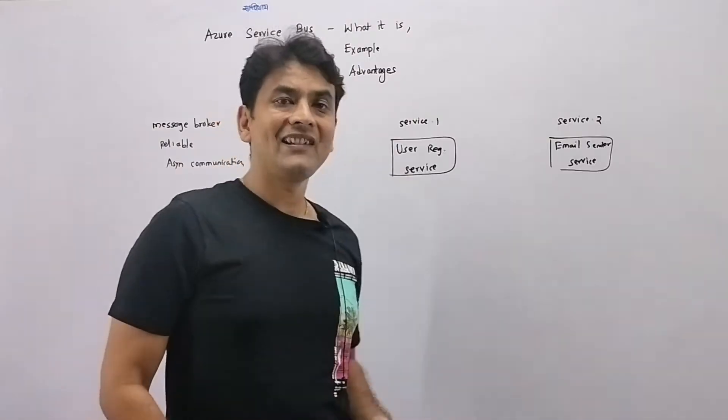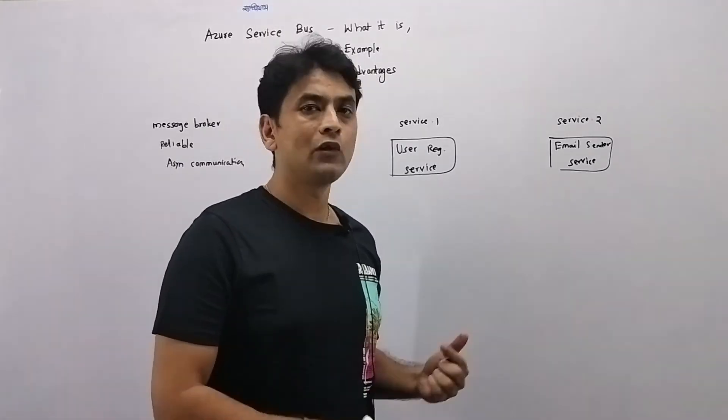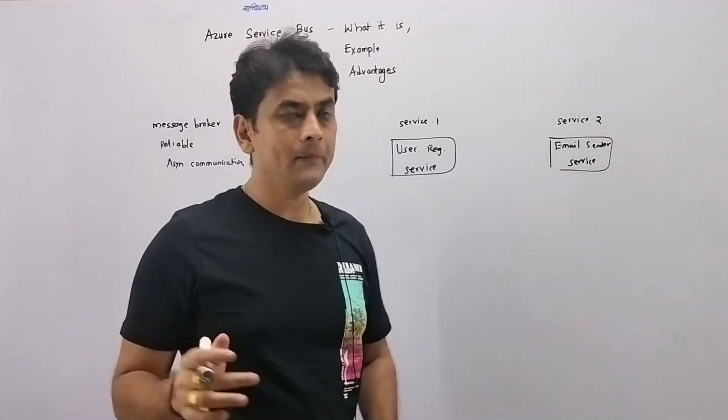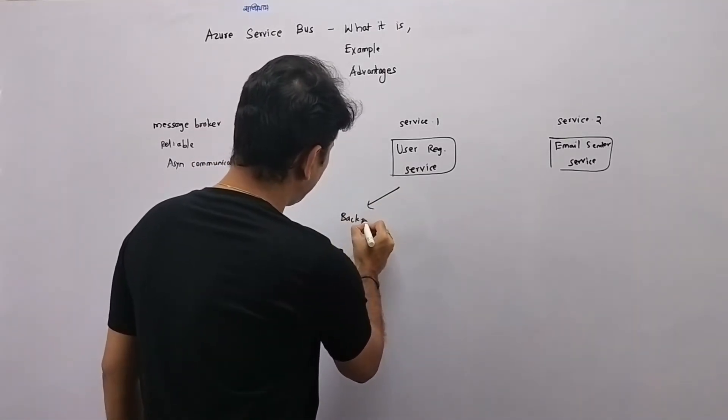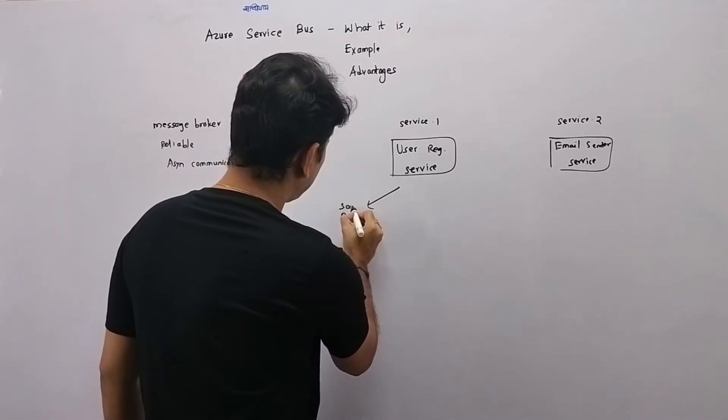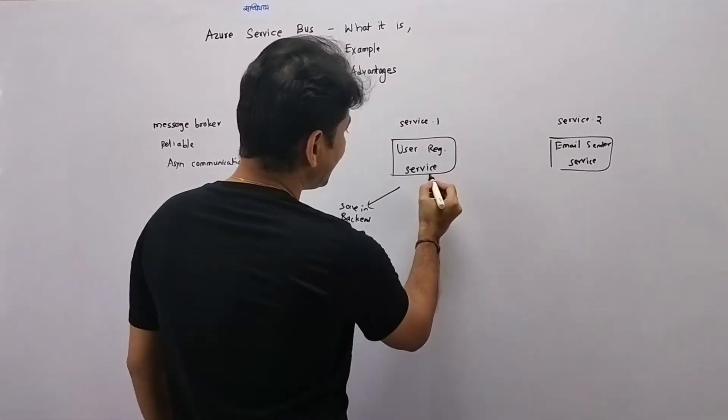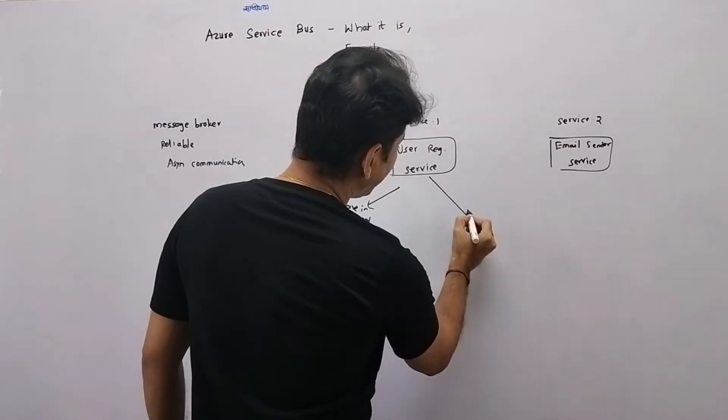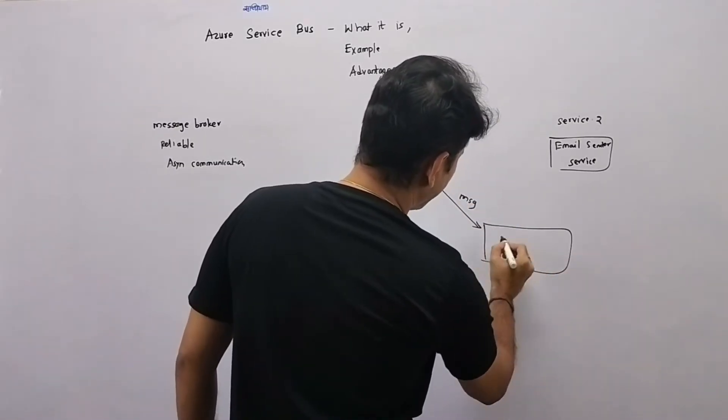So when user has registered himself within the system, first thing of course, the user's detail will be saved in the backend. So somewhere we'll save detail in the backend. And after that, this service may send a message to Azure Service Bus. So here we may have Azure Service Bus.